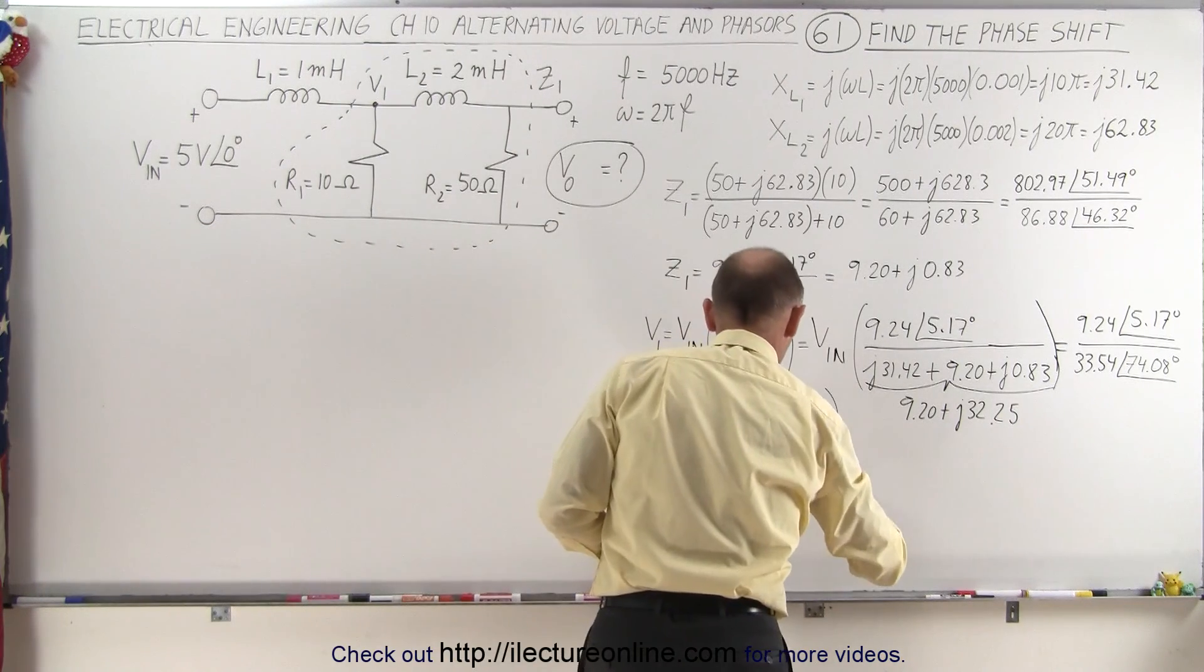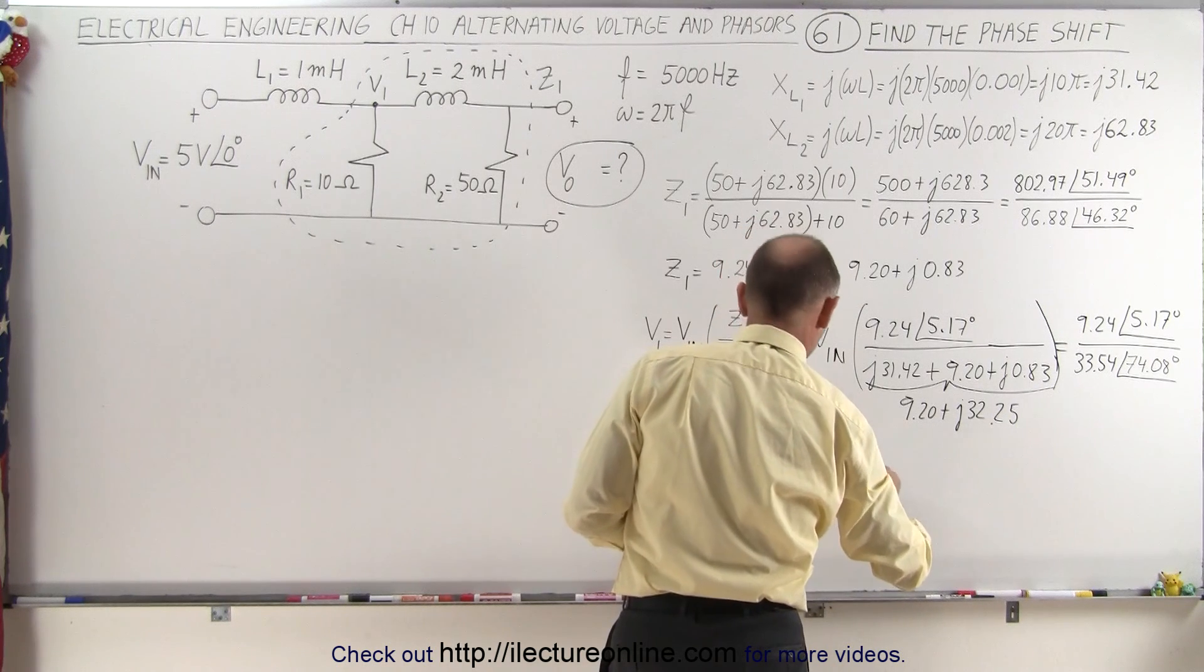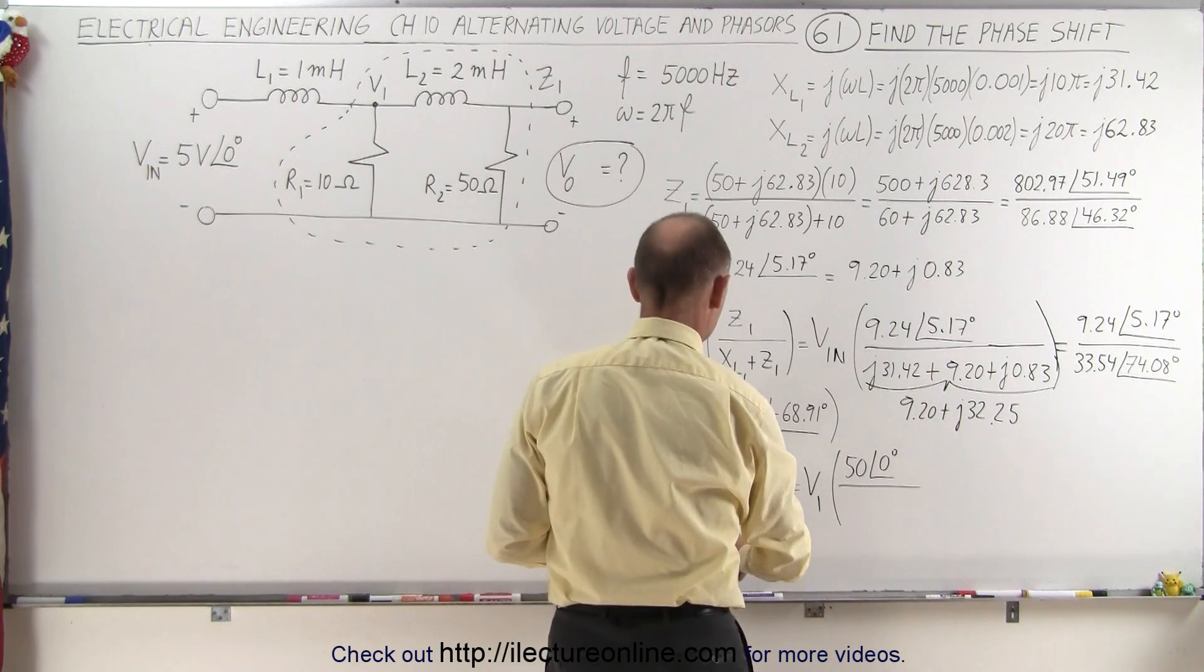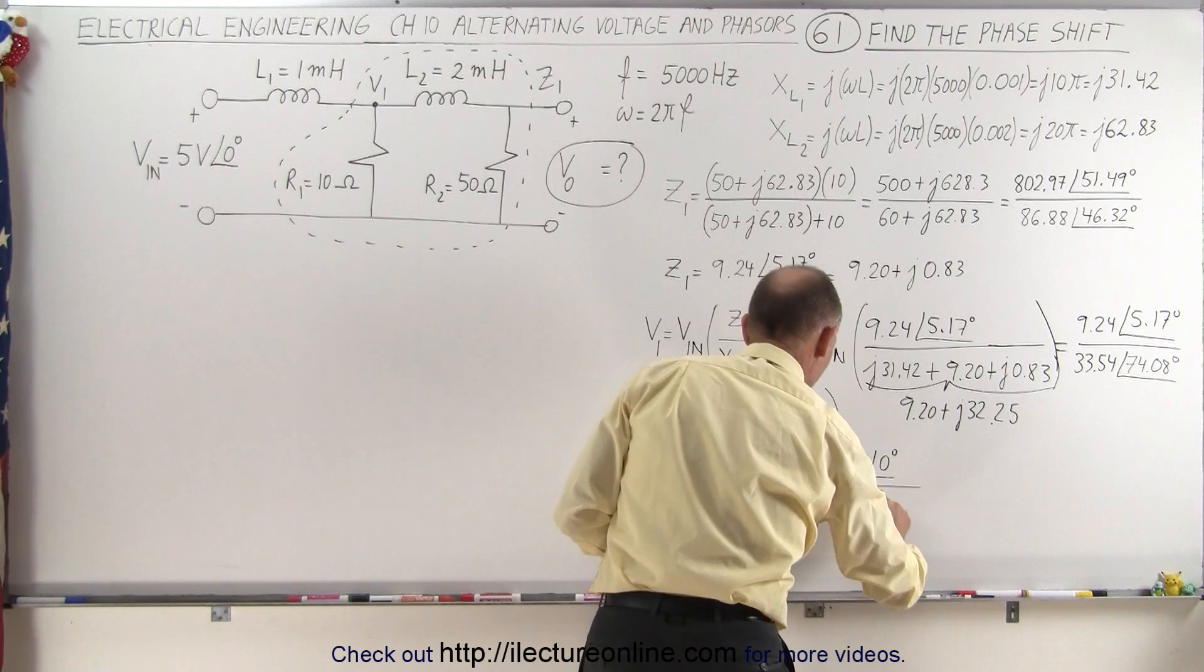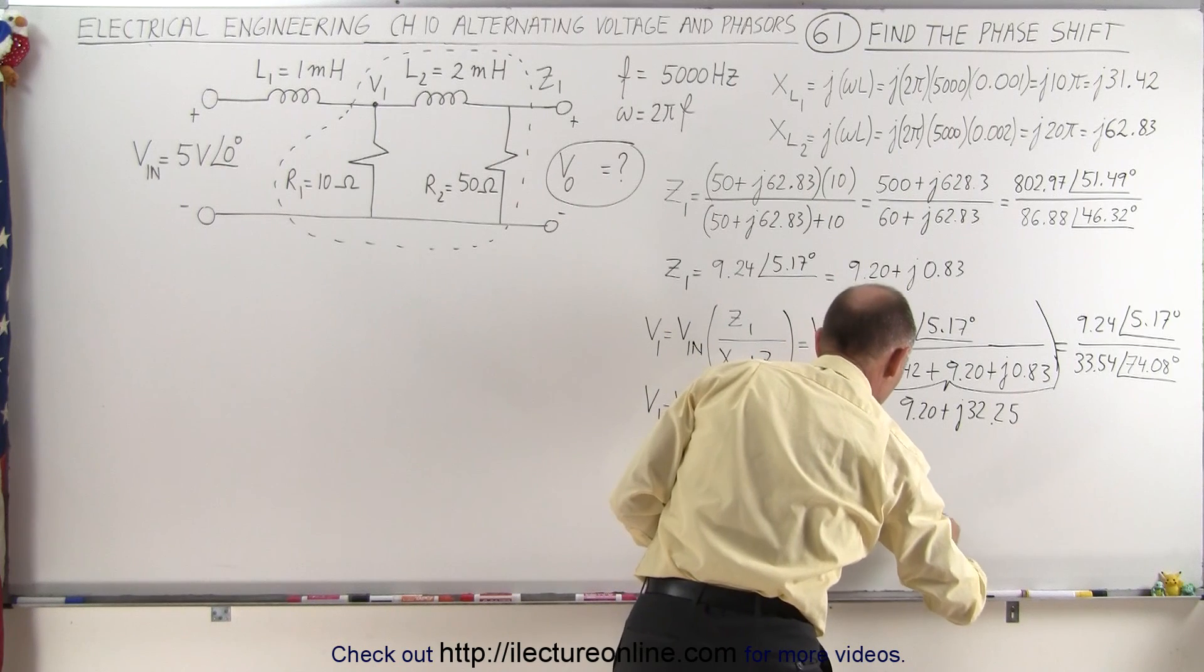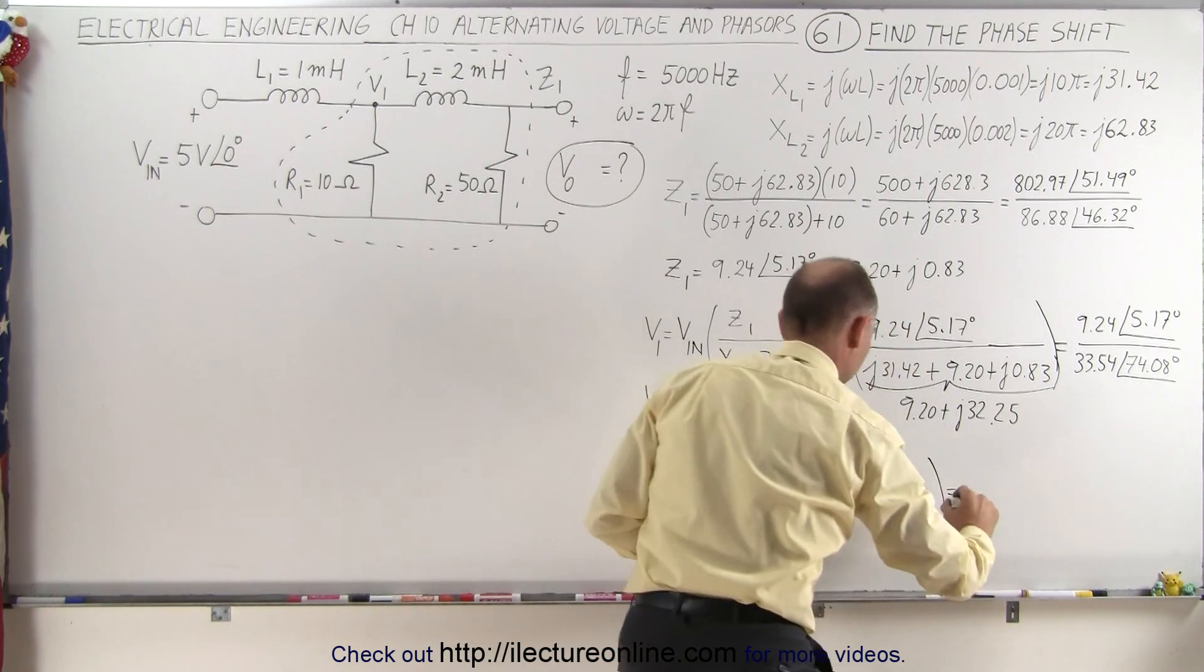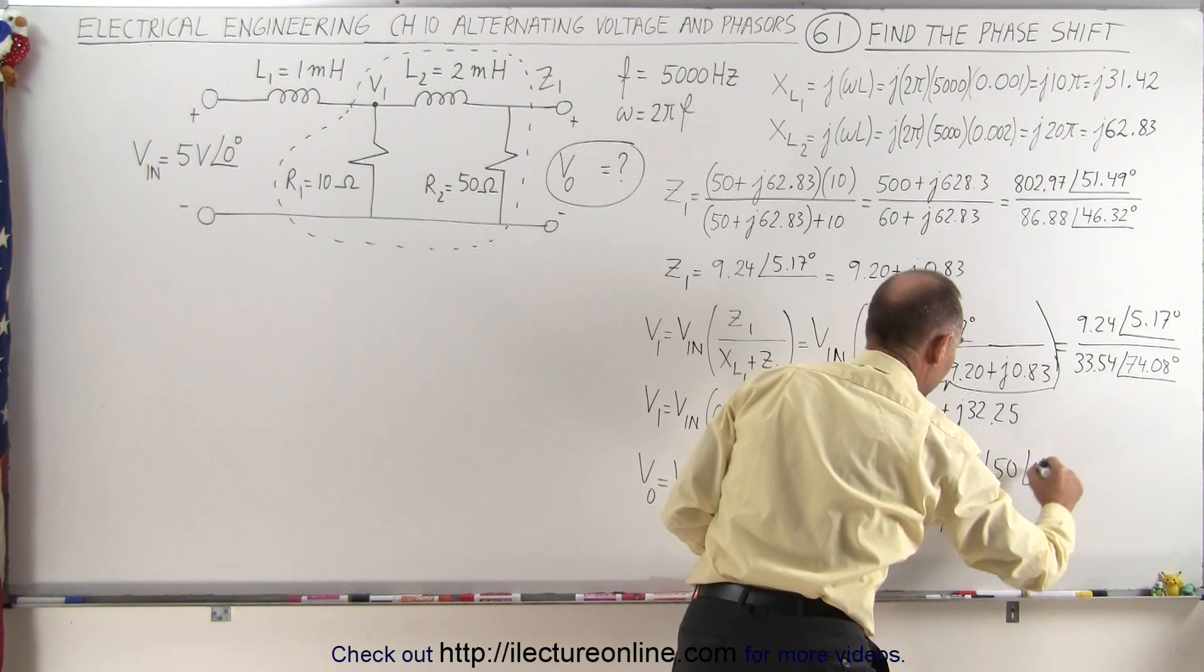This equals V1 times R2, that would be 50 with a phase angle of 0 degrees, divided by in the denominator, XL2. I'm going to reverse the order, so write this as 50 + j62.83.